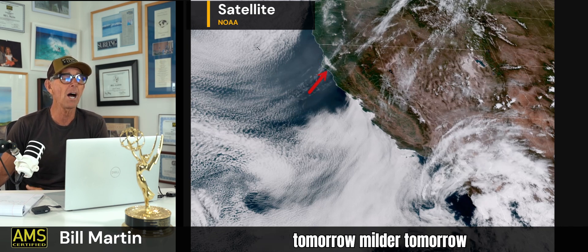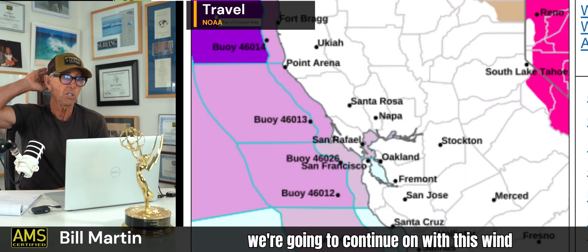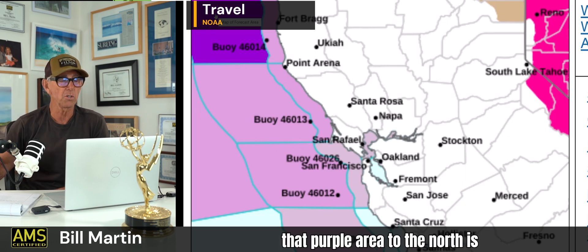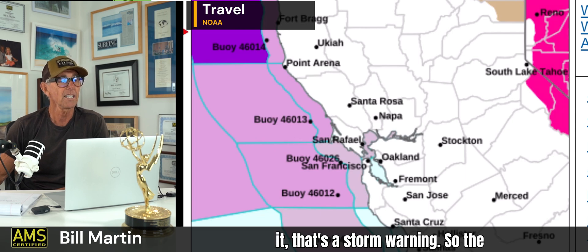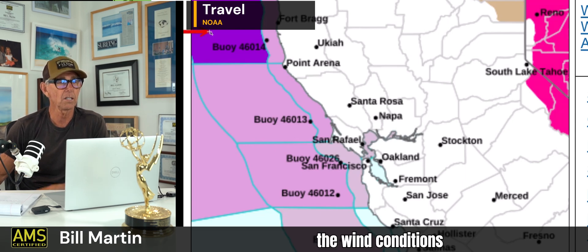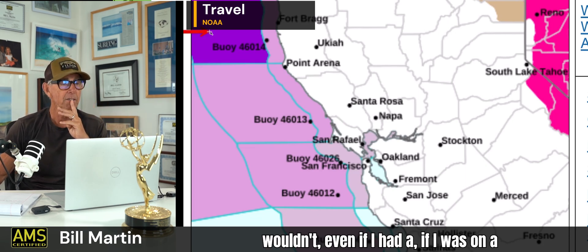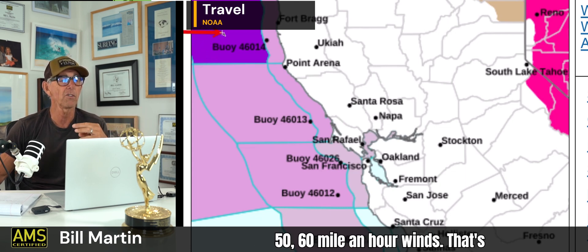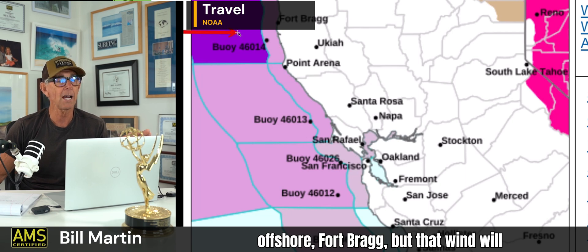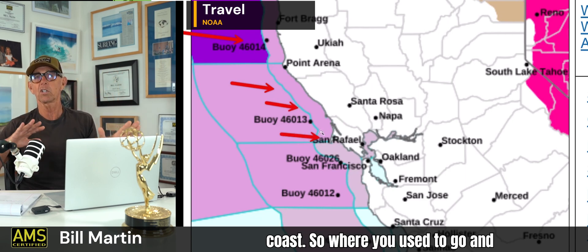It's going to be cooler, milder tomorrow. The heat advisories have been dropped. We're going to continue on with this wind. That purple area to the north is intriguing to me. Starting tomorrow, that's a storm warning — wind conditions offshore are significant. I wouldn't want to be in 50-60 mile an hour winds, even on a container ship. That's offshore, Fort Bragg. But that wind will translate to junky, mixed up, confused, kinetic surf along the coast.